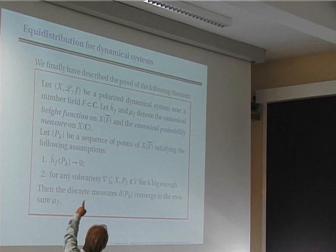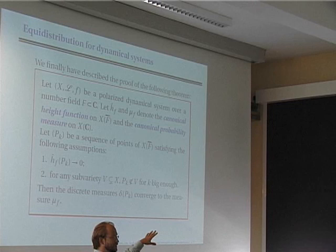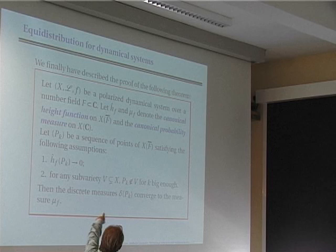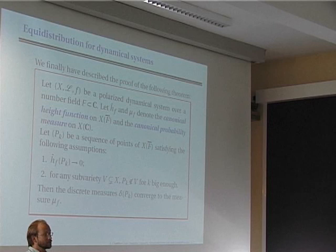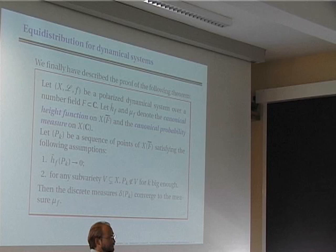The equidistribution theorem: take a polarized dynamical system over a number field F ⊂ ℂ. Denote by h_f and μ_f the canonical height and the canonical measure attached to this dynamical system. Take a sequence of algebraic points in X(F̄) such that first, the heights go to zero, and second, no subvariety contains infinitely many points. Then the discrete measures δ_{P_k} converge to the measure μ_f.